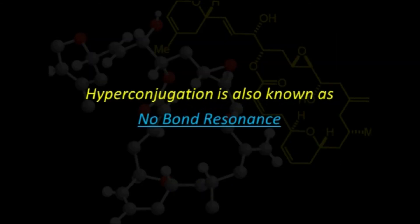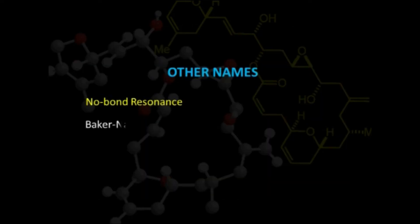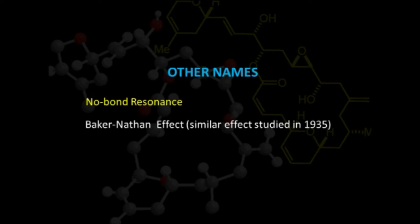Hyperconjugation is also known as no bond resonance. This effect is called no bond resonance because the hydrogen is present in the form of a proton but does not leave its position—it remains there. So there is no bond, but still there is a bond between this proton and the remaining molecule. Therefore the name 'no bond resonance' arises. A similar effect was also studied in 1935 by Baker-Nathan, and hence it is also called the Baker-Nathan effect.